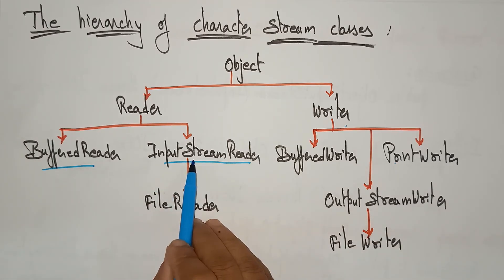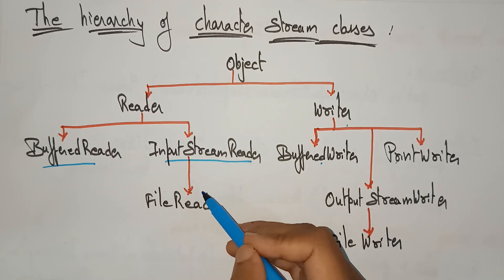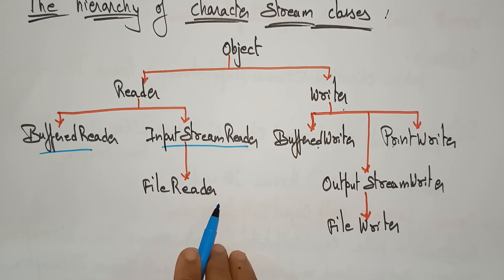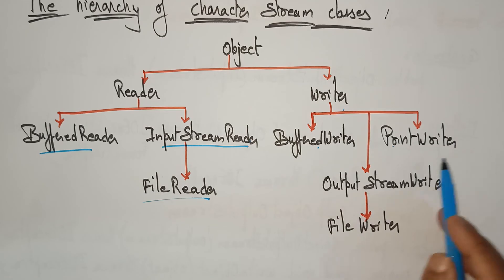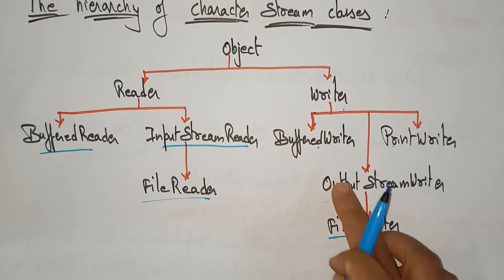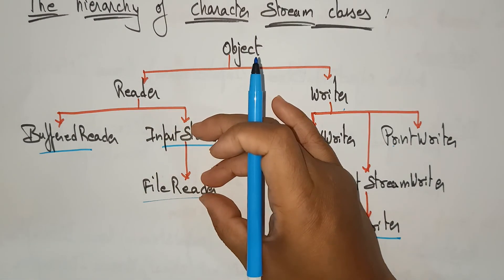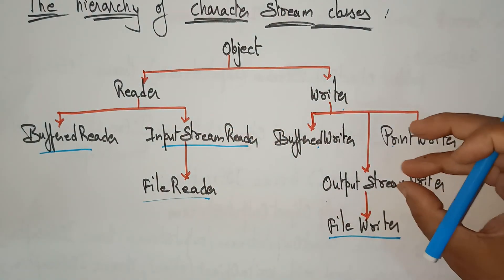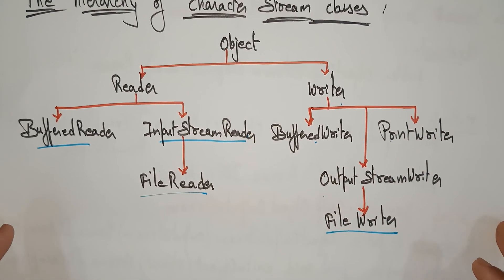InputStreamReader has a subclass called FileReader, making InputStreamReader the super class. Similarly, OutputStreamWriter has a subclass called FileWriter. So when working on a file, FileReader and FileWriter are the subclasses, while InputStreamReader and OutputStreamWriter are the super classes.